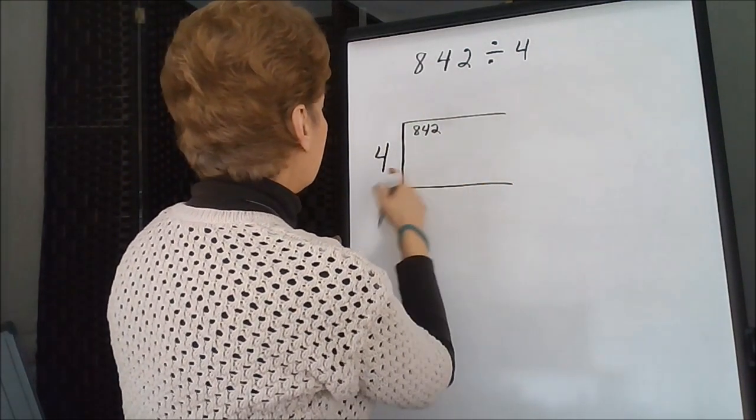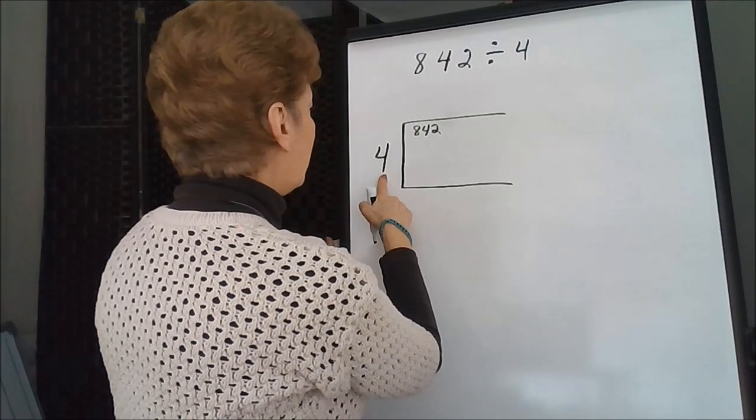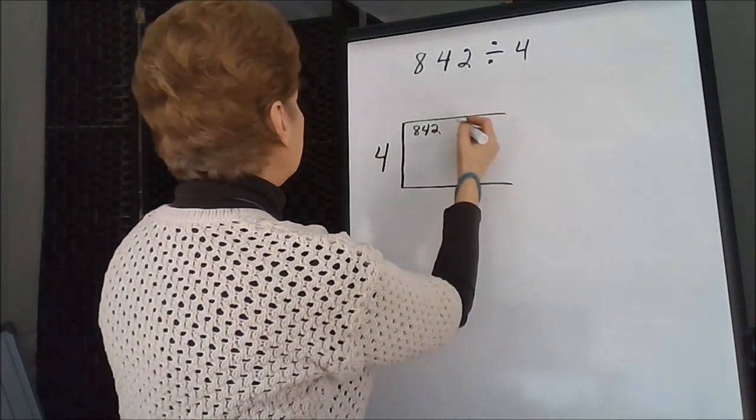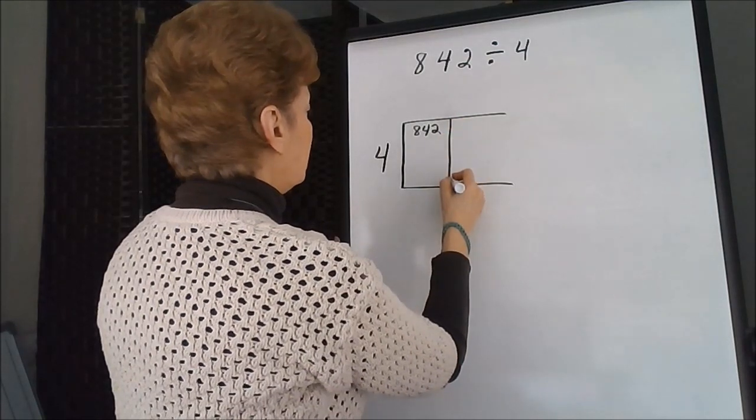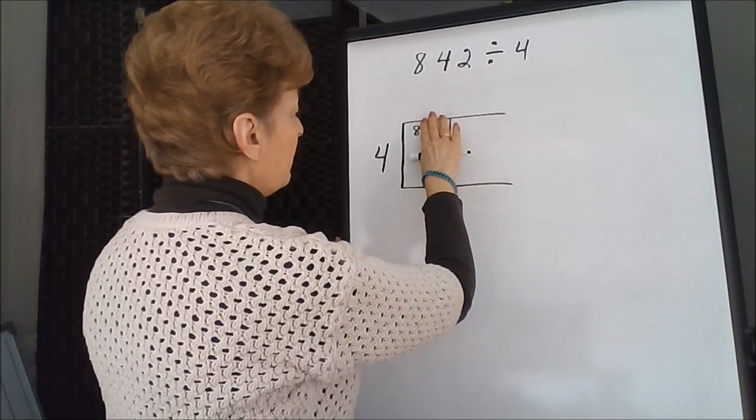And we're going to think, how many times can we take 4 into 842? You might be thinking that 4 goes into the first number, 8, two times.